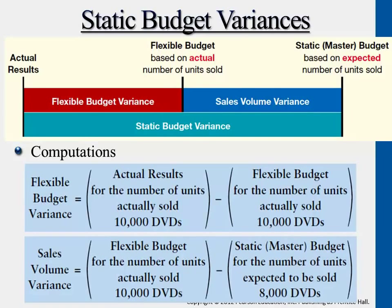Flexible budget variance is comparing when we already set the 10,000 units the same as actual outputs — these two should be the same. If variable expenses is $8 for the actual outputs and fixed cost is really $20,000 as we planned earlier, but if there are still differences between the two, then that means it's not because of additional sales. It's because something with the variable expenses and fixed expenses is not the same as what we planned. That's the part we call flexible budget variance.